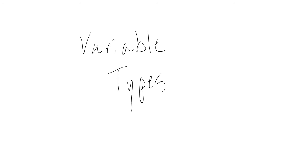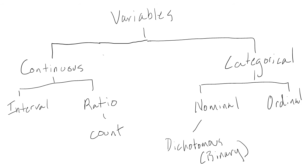In this video, I will describe the most common types of variables. Identifying types of variables is important because different statistics apply to different types of variables. This chart summarizes the different types of variables. The two main types are continuous and categorical.